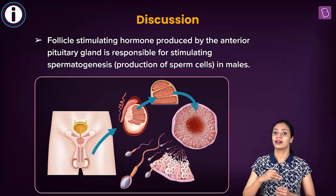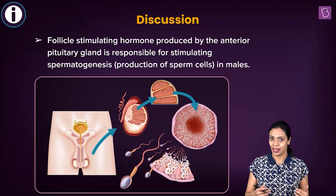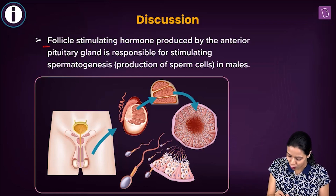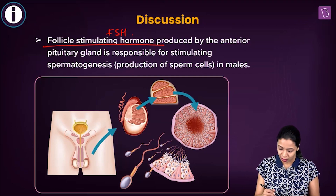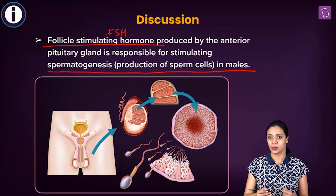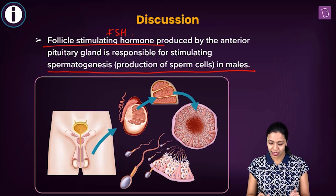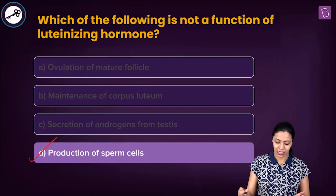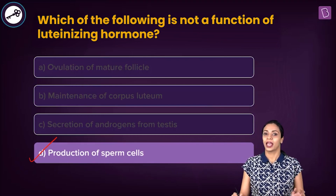Among the options, production of sperm cells is not stimulated by LH. It is stimulated by the other gonadotropin released by the anterior lobe of the pituitary — FSH, follicle stimulating hormone. FSH acts on the testes in males and stimulates spermatogenesis, the process by which sperm are formed. So production of sperm is stimulated by FSH, not LH. The correct answer is option D: production of sperm cells.